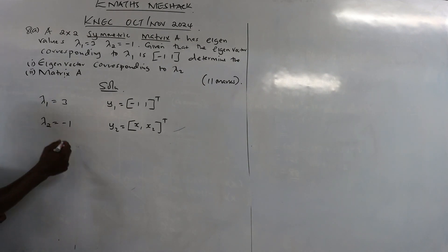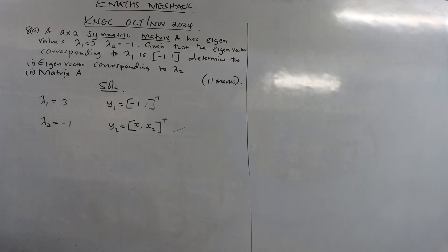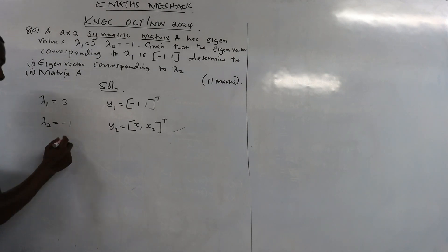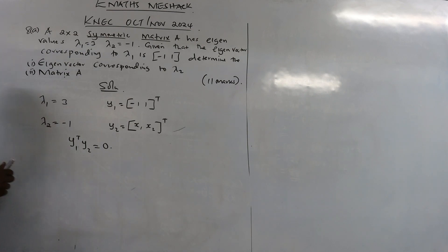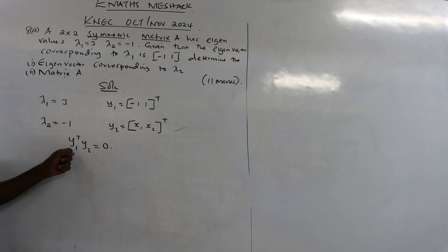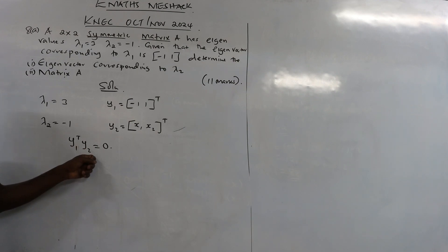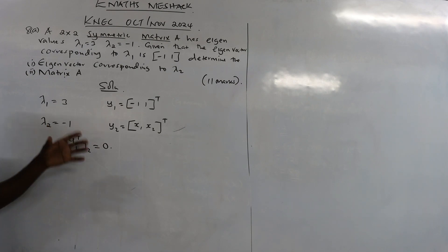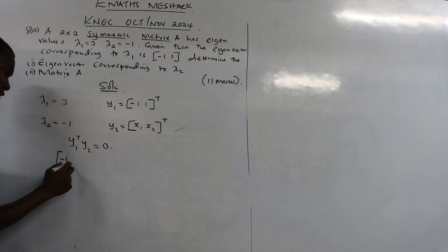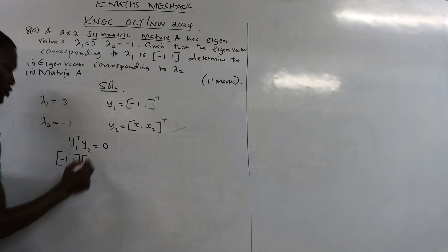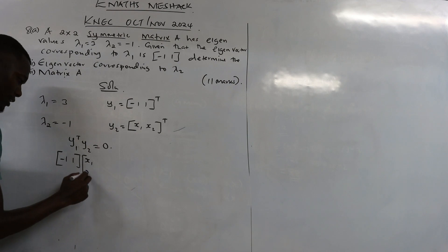There is a property for every symmetric matrix: the eigenvectors are orthogonal. This property states that y1 transpose multiplied by y2 should equal zero. This property alone will help you solve the first part. So taking y1 transpose as the row vector (-1, 1) and multiplying by y2 as the column vector (x1, x2), the answer should give us zero.